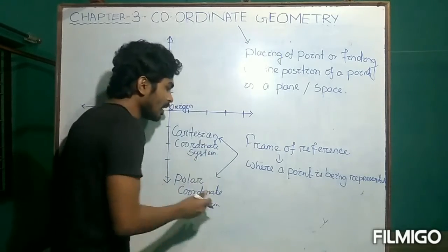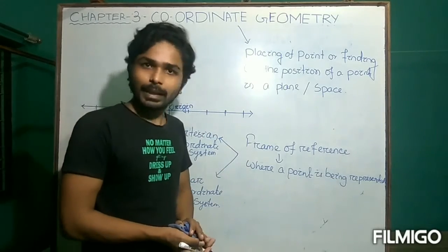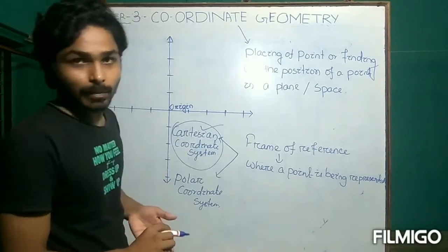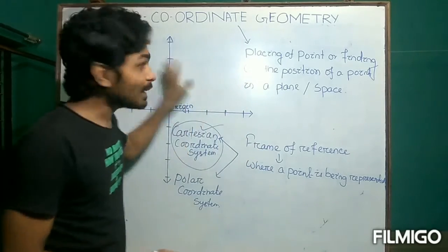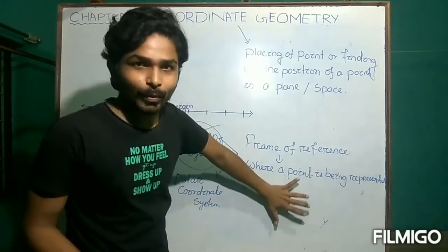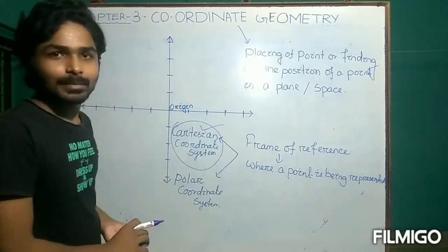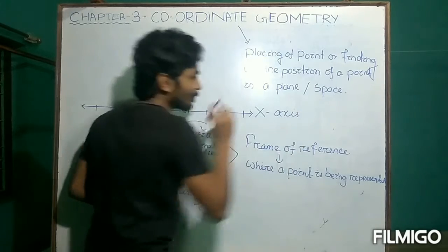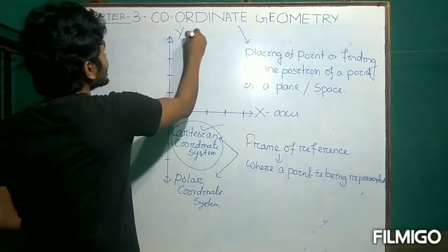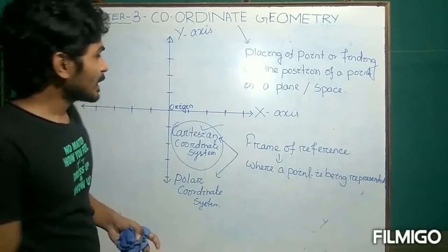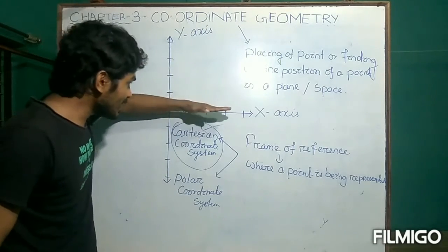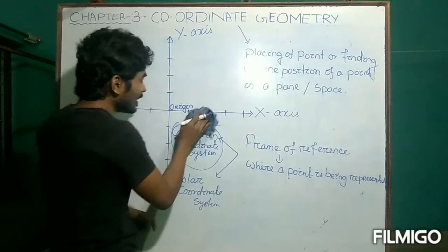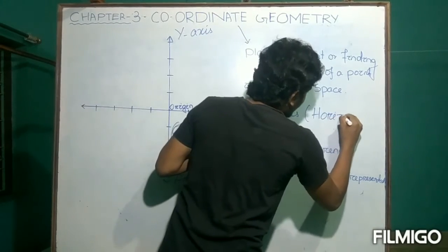We will individually learn about the Cartesian and polar coordinate systems. First, let us talk about the Cartesian coordinate system. A point can be represented in a plane like this whiteboard. In this whiteboard there are two axes — this axis is called the x-axis, and this axis is known as the y-axis. The x-axis is parallel to the base, so it is known as the horizontal axis.